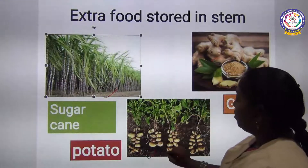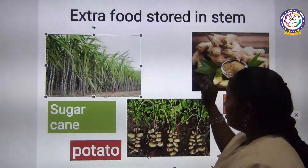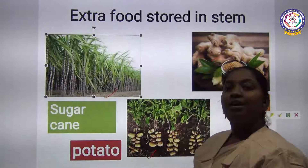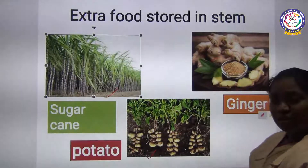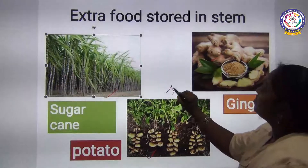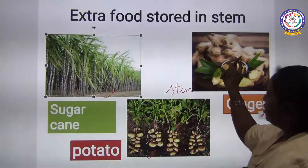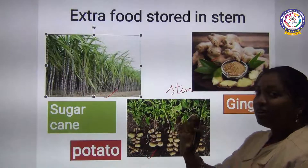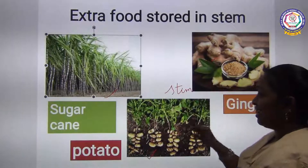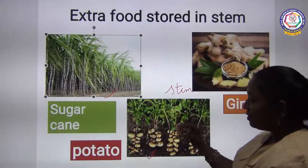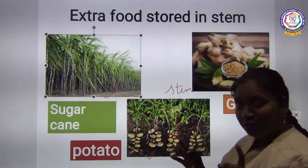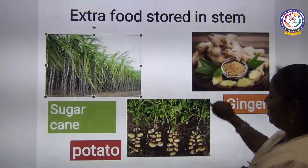Ginger and potato are also important examples. Do you know where they grow? They grow under the ground. So you might say they are roots — but definitely not! Even though they grow under the ground, you cannot call them roots. Ginger and potato are stems. They are so useful — ginger is used as medicine when you have a cold, and potato chips are something everybody likes. These are extra food stored in the stem that we eat. I hope this concept is very clear to you. We will see you in the next topic. Thank you, children!